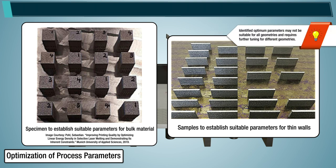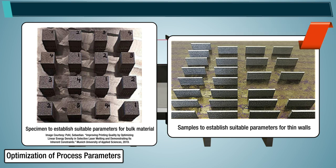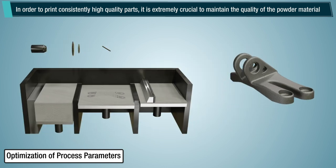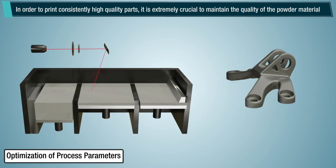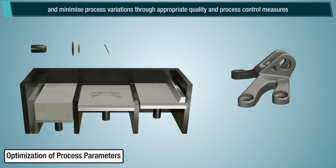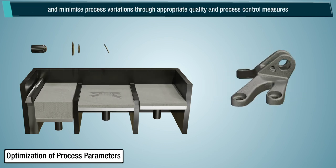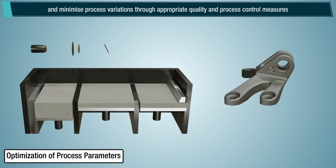Note: Identified optimum parameters may not be suitable for all geometries and requires further tuning for different geometries. In order to print consistently high-quality parts, it is extremely crucial to maintain the quality of the powder material and minimize process variations through appropriate quality and process control measures.